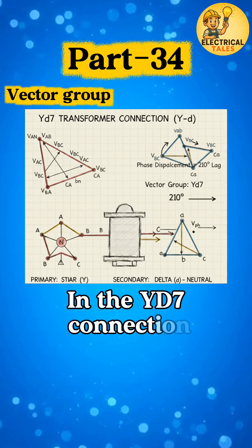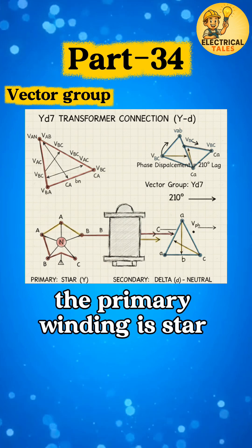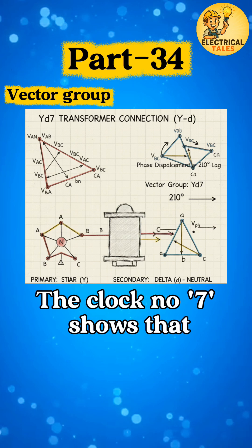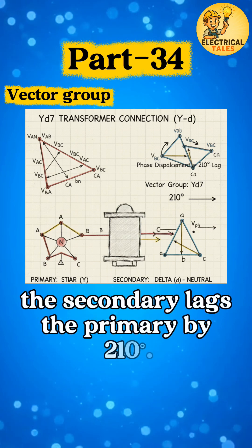In the YD7 connection, the primary winding is star and the secondary is delta. The clock number 7 shows that the secondary lags the primary by 210 degrees.